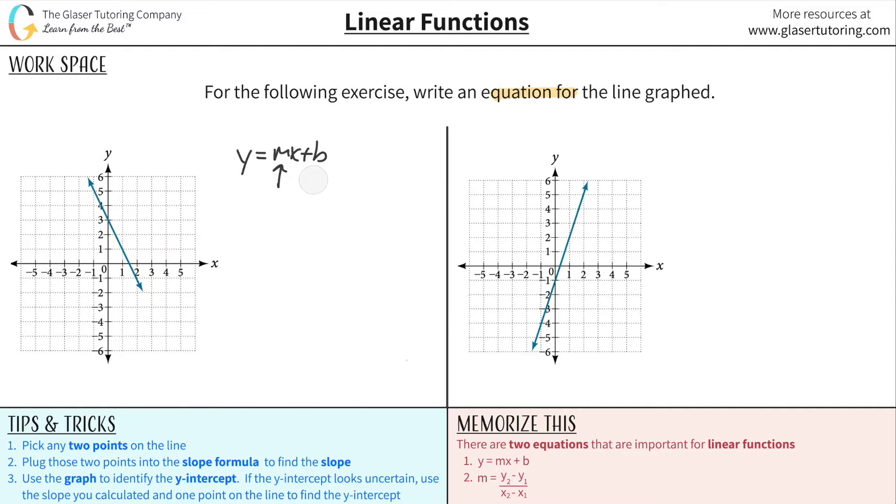Now when you're given a graph, finding the y-intercept might be easy. Basically remember the y-intercept is the location at which the line intersects the y-axis. In this one, it looks like it beautifully intersects the y-axis right at 3. So knowing that that's the case, I actually already know what b is. b will be equal to 3.